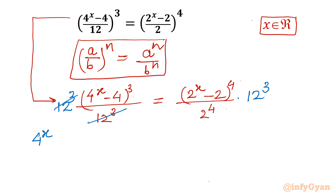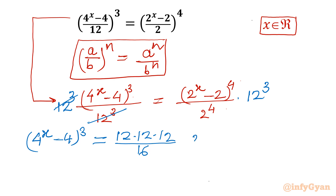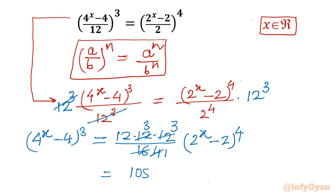Now we simplify the right-hand side. We have (4^x - 4)^3 equal to (12 × 12 × 12)/16 times (2^x - 2)^4. Cancelling factors gives us 108 times (2^x - 2)^4 on the right-hand side, and (4^x - 4)^3 on the left.